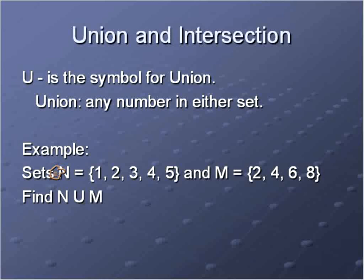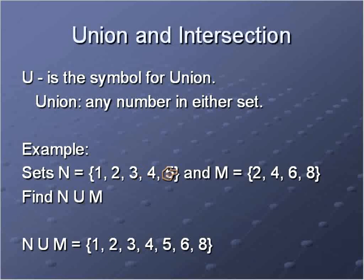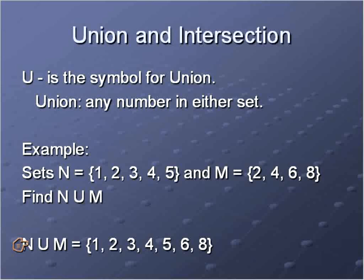Here's an example. We have set N = {1, 2, 3, 4, 5} and set M = {2, 4, 6, 8}. We're asked to find the union of N and M. We're going to list any number that is in either one of those sets. So we list 1, 2, 3, 4, 5 from set N. We've already got 2 and 4, so from set M we just add 6 and 8. Numbers 2 and 4 appear in both sets but we only list them once. So the union of N and M is {1, 2, 3, 4, 5, 6, 8}, listed in chronological order.